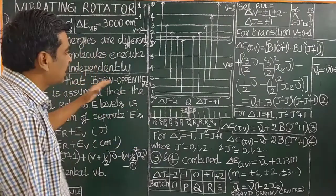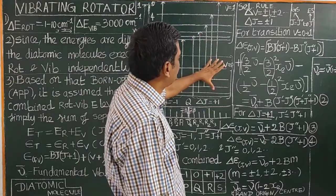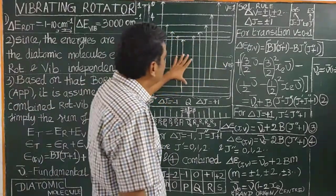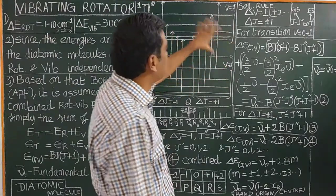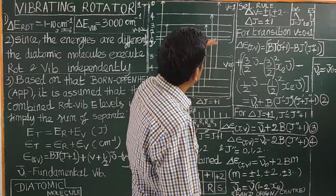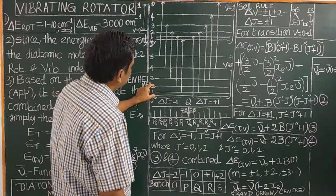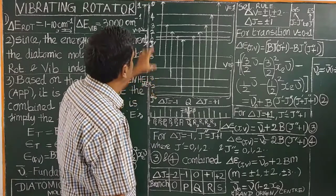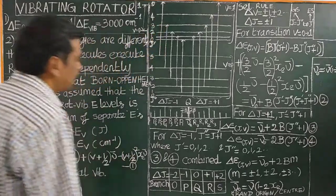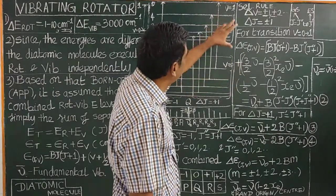Now let us see the energy levels associated with the vibrational energy levels. These are the rotational energy levels for V equal to 0 and V equal to 1 — the vibrational levels. The energy level separations are similar because the rotational constants for V equal to 0 and V equal to 1 are the same.